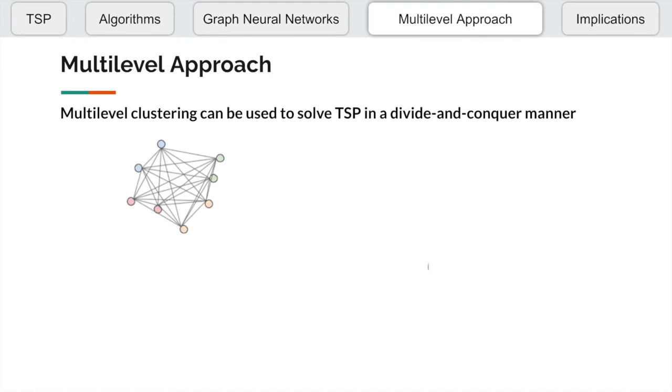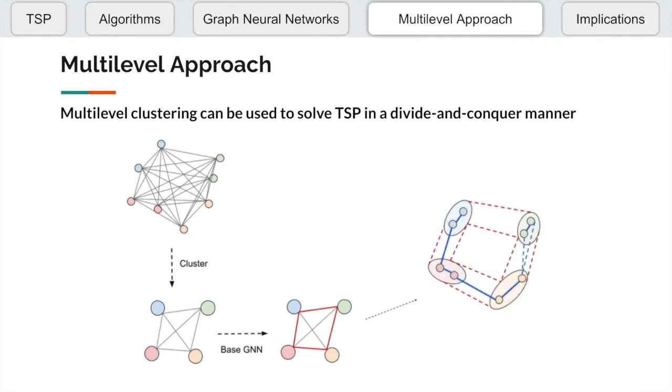To solve this, we propose a divide and conquer approach which first clusters the input graph multiple times into smaller parent graphs. The TSP for the smallest parent graph is calculated using our graph neural network. We then go through each cluster level connecting the child nodes based on parent TSP tours until we reach the original graph.